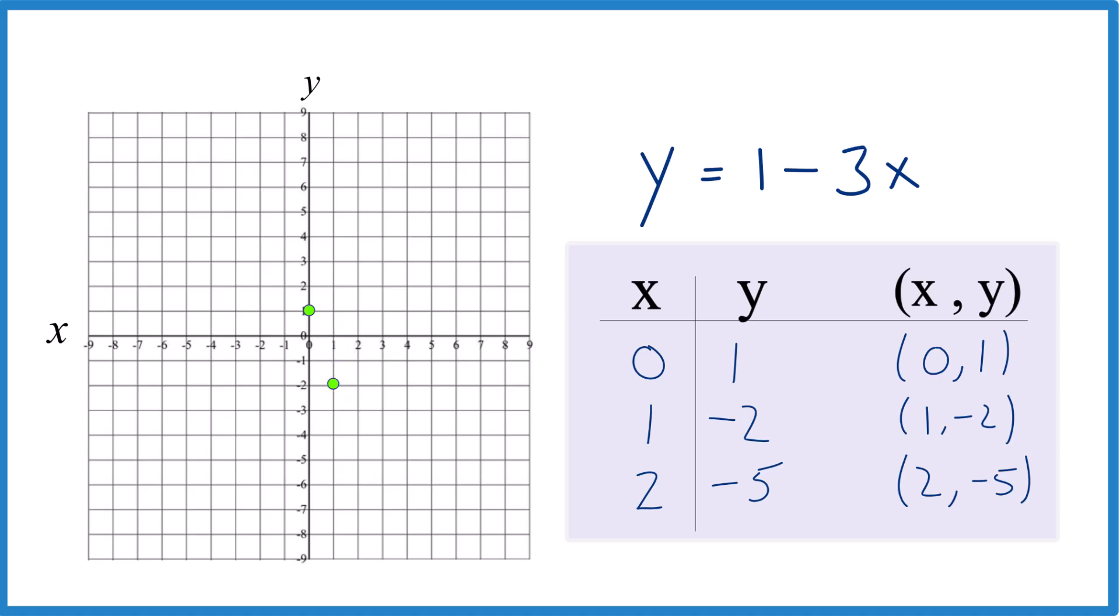And you could graph with just 2 points. I'd rather use 3, though, in case I made a mistake up here. x is 2, y is negative 5. And you can see they all line up.